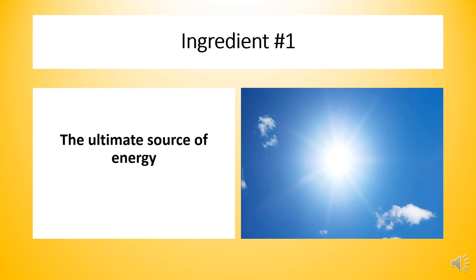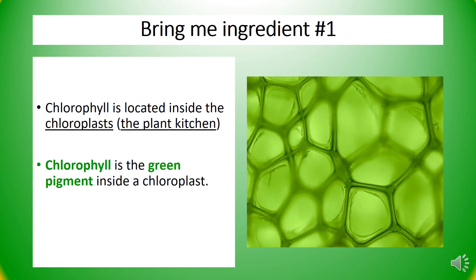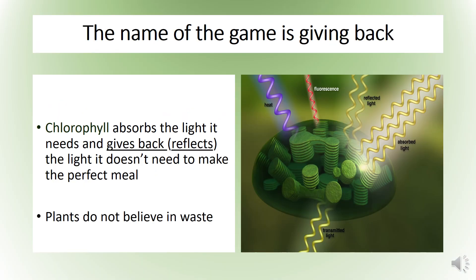The first ingredient is sunlight. On a science test, if you ever see a question referred to the ultimate source of energy on Earth, the answer will be the sun. Inside these little plant kitchens — chloroplasts — is a pretty green pigment known as chlorophyll. This is what gives a plant its green color. In the first part of the cooking process, the chlorophyll inside a chloroplast gets excited to see the sunlight and starts collecting just the right amount of light it needs. A plant doesn't believe in wasting anything, so it reflects — also known as giving back — the parts of light not required for photosynthesis.